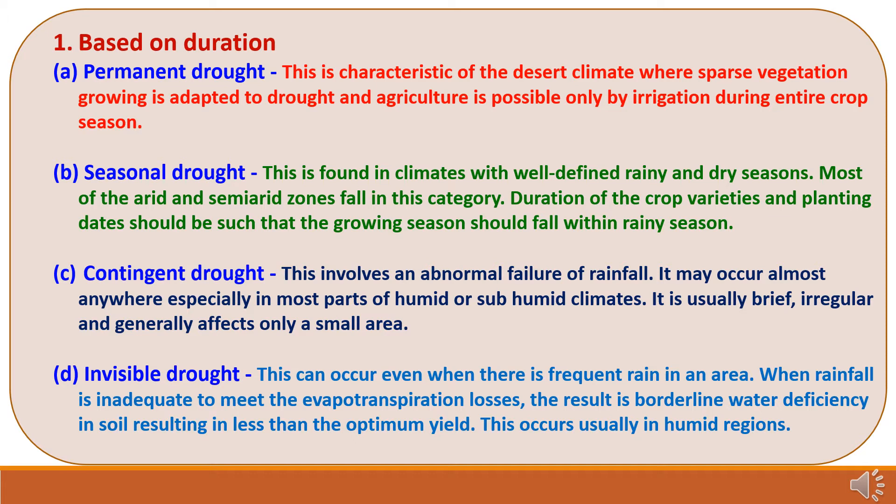Third is contingent drought. This involves an abnormal failure of rainfall. It may occur almost anywhere, especially in most parts of humid or sub-humid climates. It is usually brief, irregular, and generally affects only a small area. Fourth is invisible drought. This can occur even when there is frequent rain in an area. When rainfall is inadequate to meet the evapotranspiration losses, the result is a borderline water deficiency in soil resulting in less than the optimum yield. This occurs usually in humid regions.